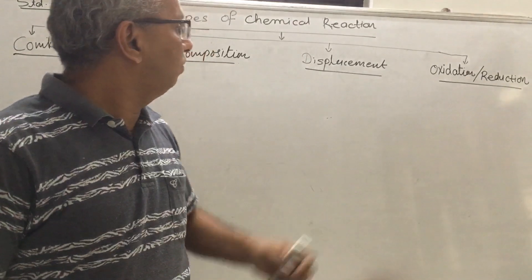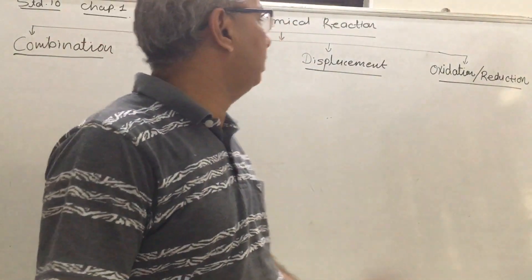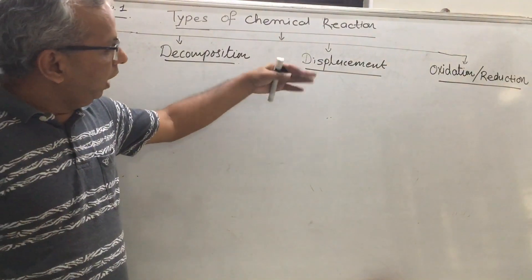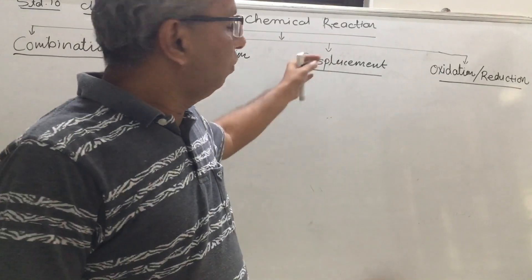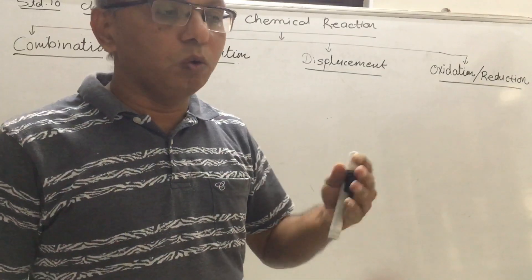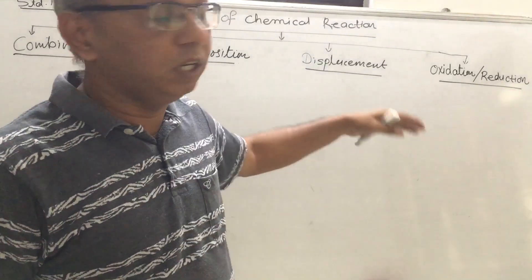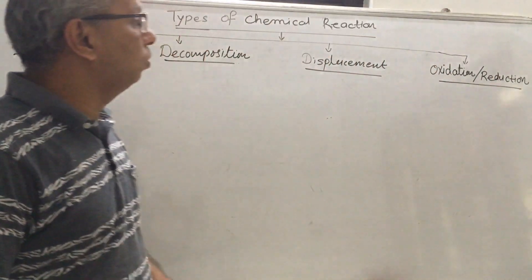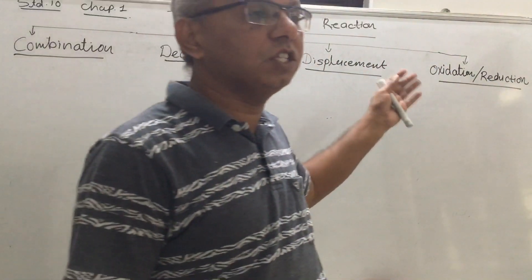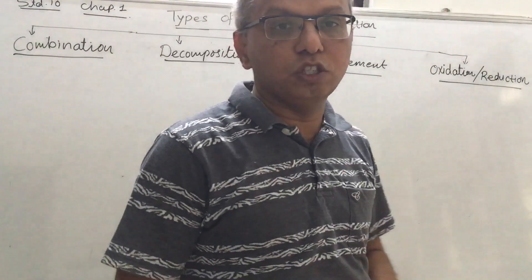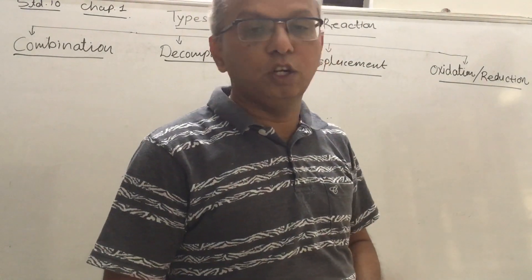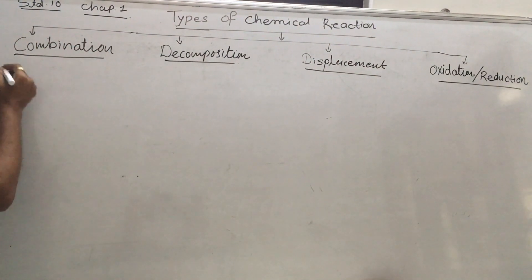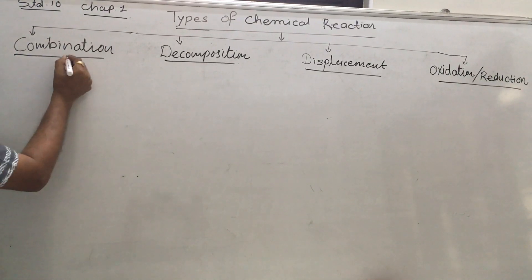Third is displacement reaction, which is of two types: single displacement and double displacement. When a less active metal is displaced by a higher active metal, it is called a displacement reaction. Fourth, oxidation and reduction reactions involve the exchange or addition and removal of oxygen and hydrogen. We will learn all of them one by one.